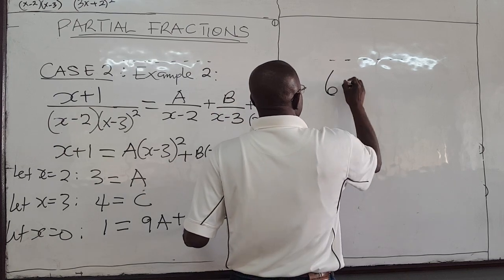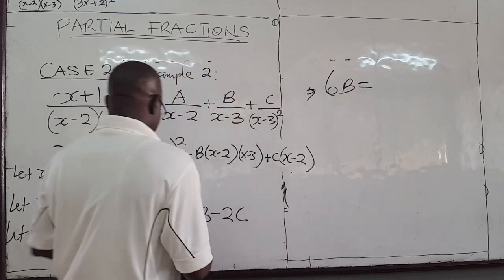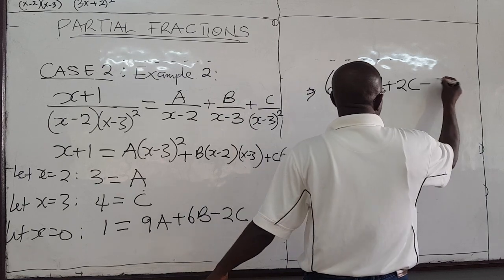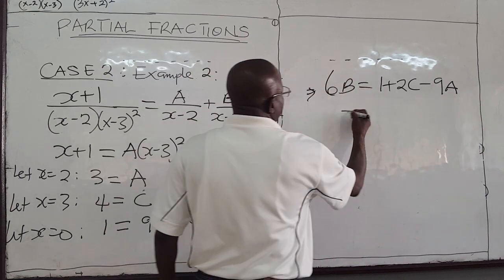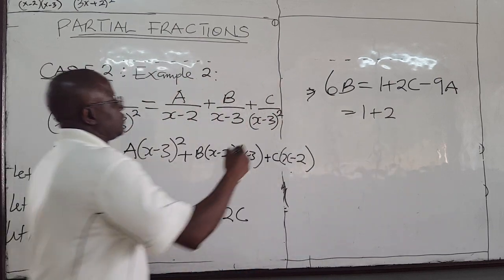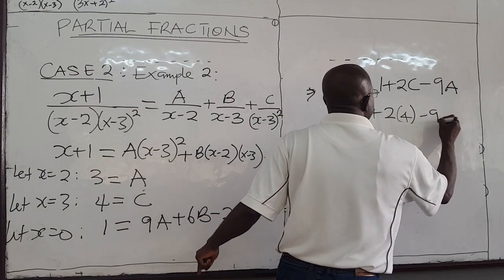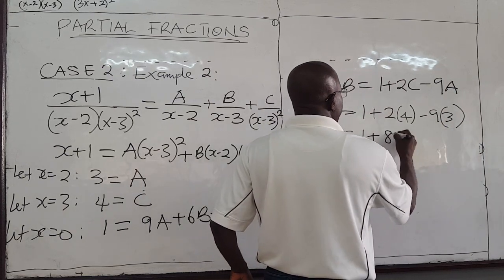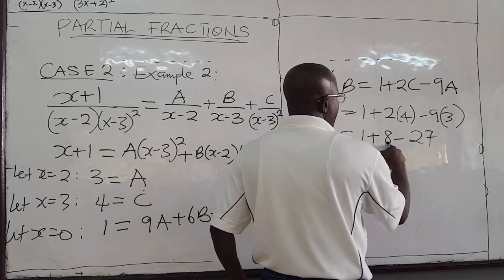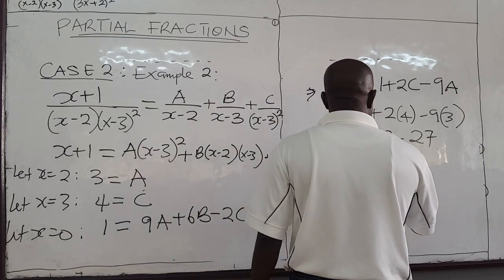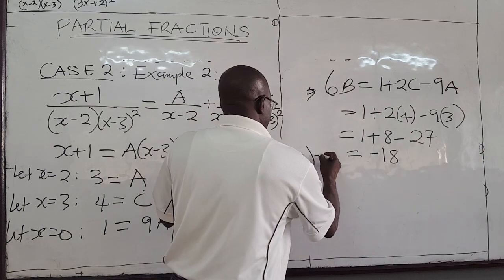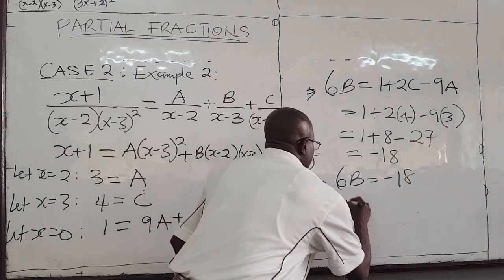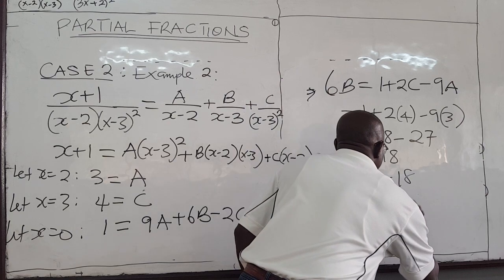We are solving for B because we know A and C. So 6B. 6B will be equal to what? I'm going to take these guys here. So I have 1 plus 2C minus 9A. So I have 1, 2, C is what? C is 4. So you put 4 there. 9A is what? A is 3. I put 3 here. So this gives me 1 plus 8 minus 3 is 7, that is 9 minus 3 is 7, that is negative 18. So 6B, 6B, 6B is equal to negative 18. Divide both sides by 6. 18 divided by 6 is 3. So that is negative 3.